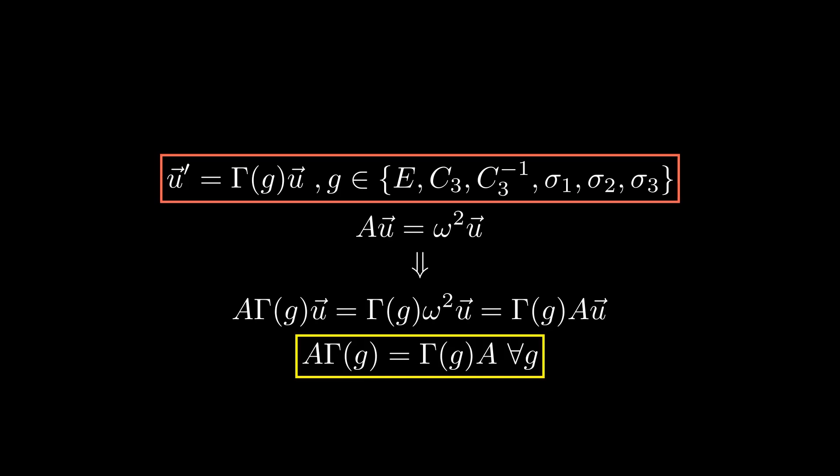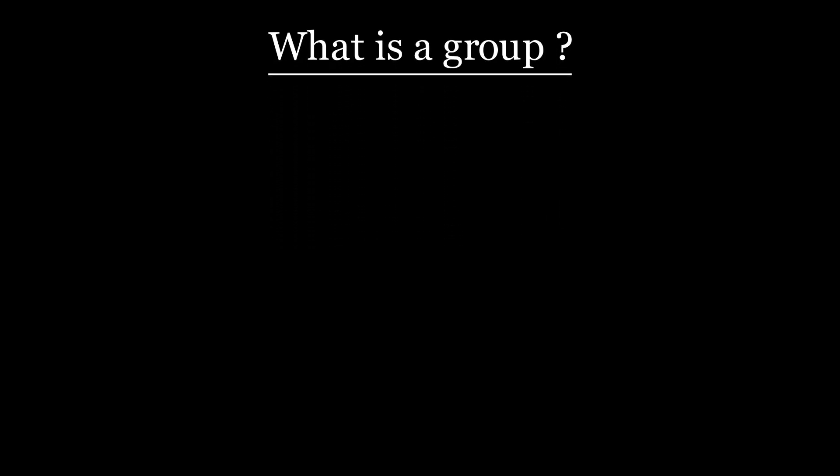The first thing we want to define is what is a group. Formally, it is a set of abstract elements with a given multiplication law. This law has to be defined for every pair of elements, and has to follow some properties that I won't cite here because they are not necessary for this video. In our context, these abstract elements represent symmetry transformations, such as rotations and reflections, which we denoted before by c3, sigma1, etc. And we define the multiplication between two elements as the result from applying the transformations from right to left.